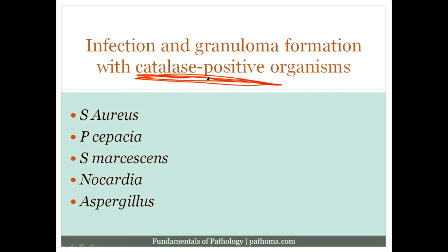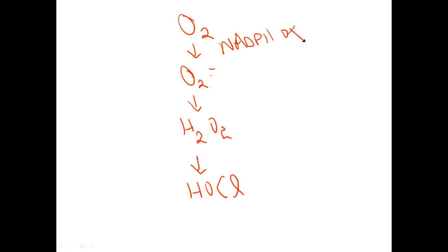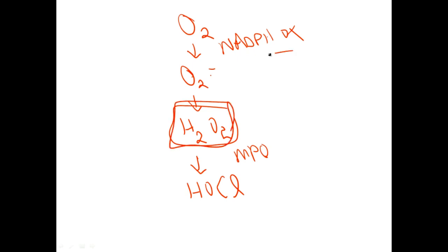Going back to the whiteboard: oxygen forms superoxide, superoxide forms hydrogen peroxide, and hydrogen peroxide eventually forms bleach, mediated by NADPH oxidase and myeloperoxidase. What's really happening is we're generating hydrogen peroxide and converting it to bleach. There are two ways to get hydrogen peroxide: one is via the NADPH oxidase pathway where oxygen converts to superoxide then hydrogen peroxide; and if NADPH oxidase is deficient, that pathway is knocked out.